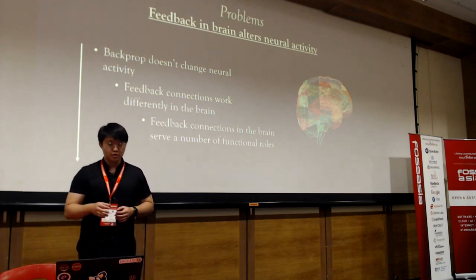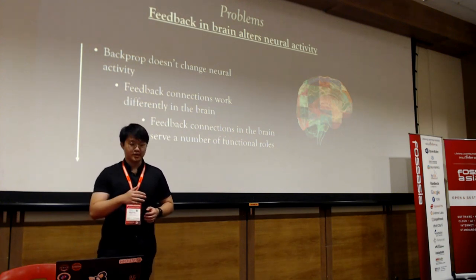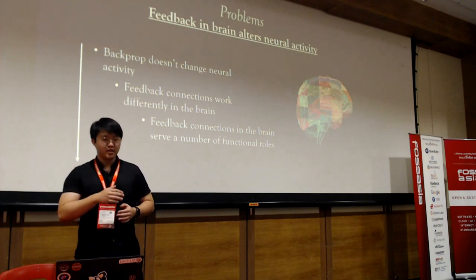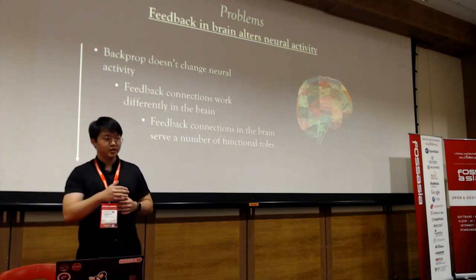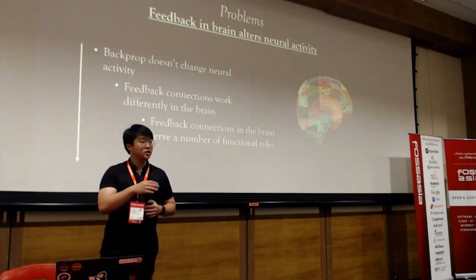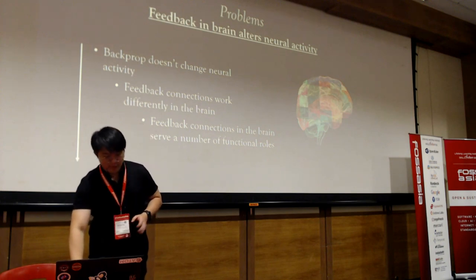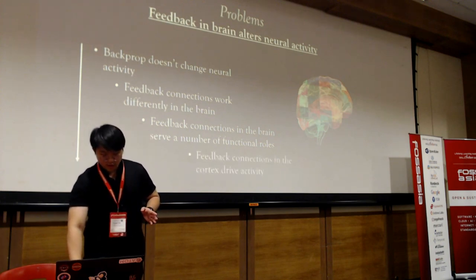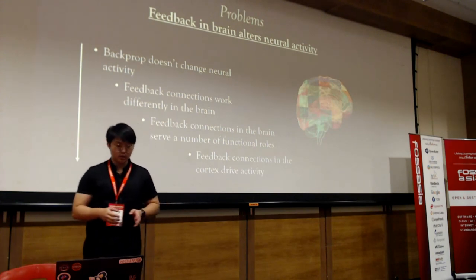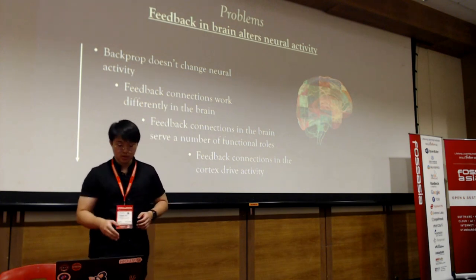Feedback connections in the brain serve a number of functional goals. Top-down control through feedback connections has a well-established link with gain control — the enhancement or suppression of neural responses. For example, attention to a particular feature in your visual field is influenced by feedback connections.